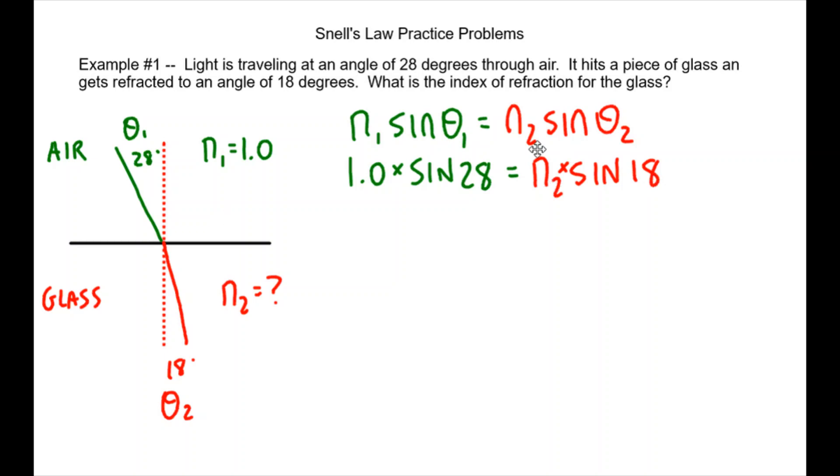So we just have to do the math to solve for n2. We took the sine of 28 times 1, and the sine of 18 is 0.31. So we have 0.47 equals n2 times 0.31, and now we're going to get n2 by itself by dividing by 0.31, and we get 1.52 as n2, which makes sense because this glass has an n value of 1.52 and it's more dense so it's going to bend the light wave towards the normal.